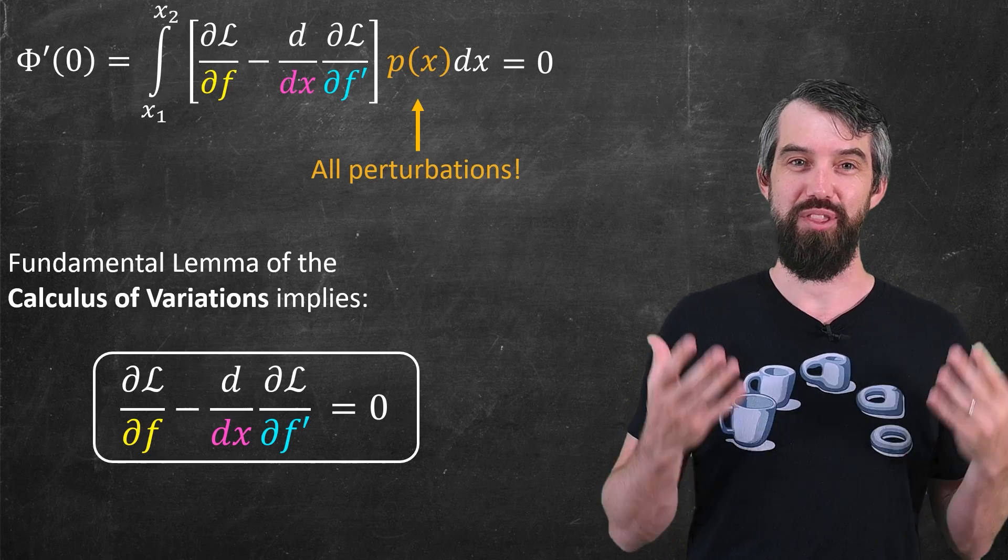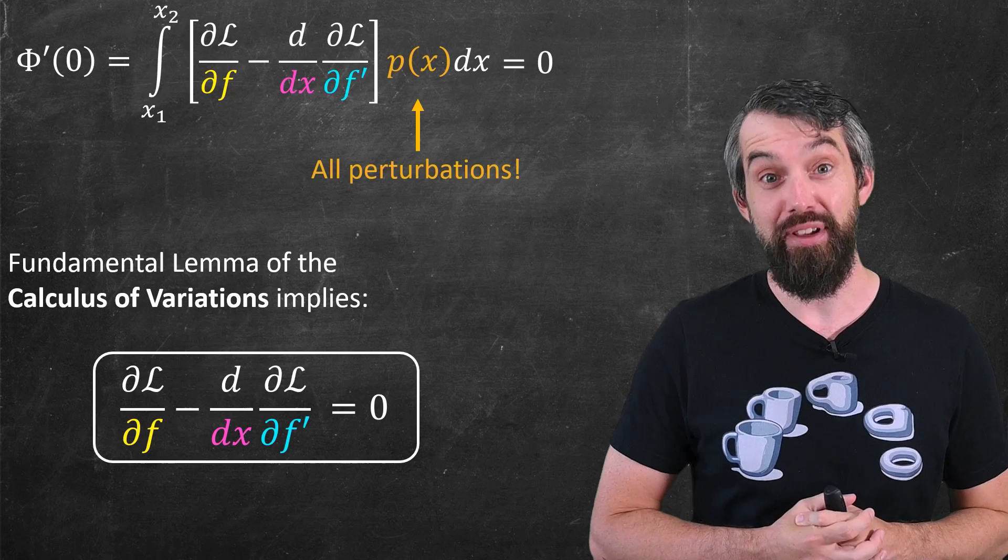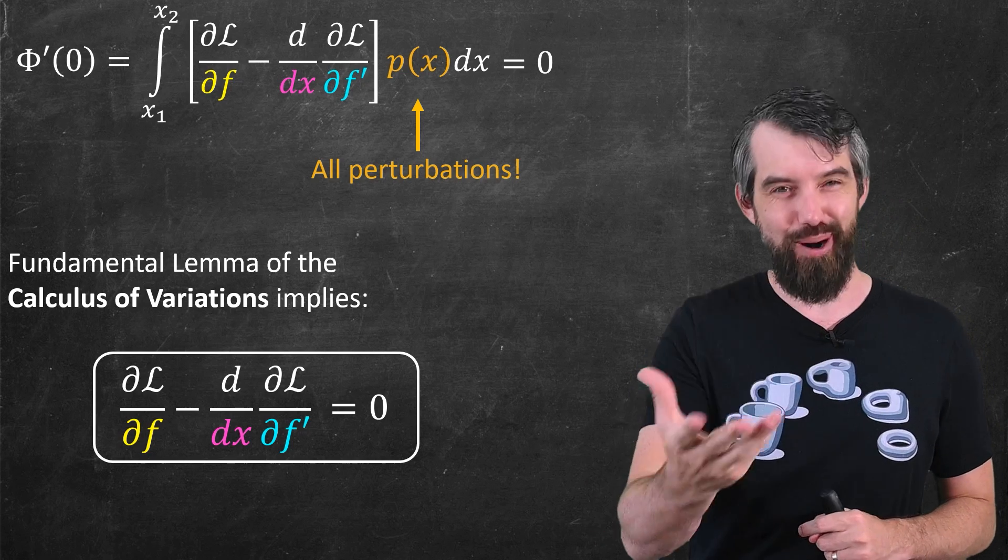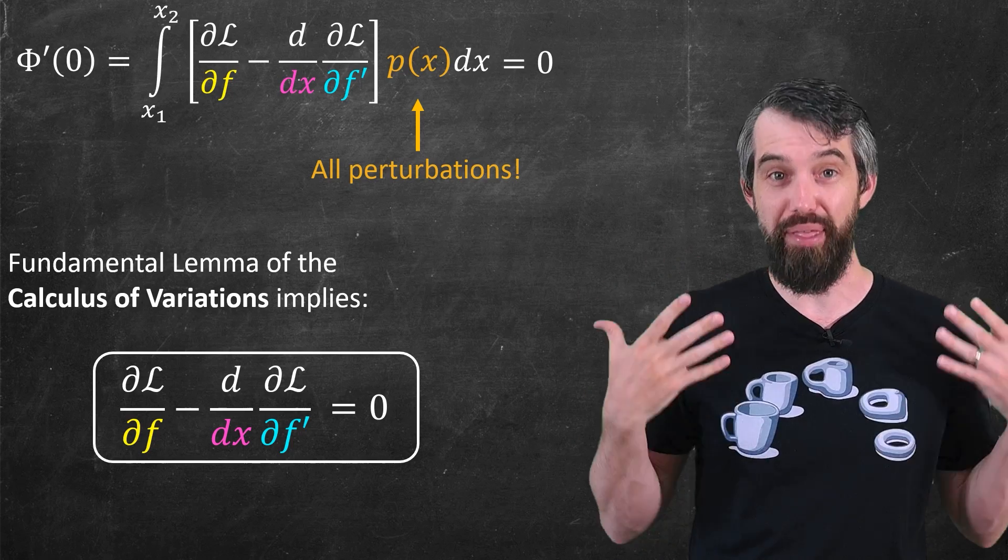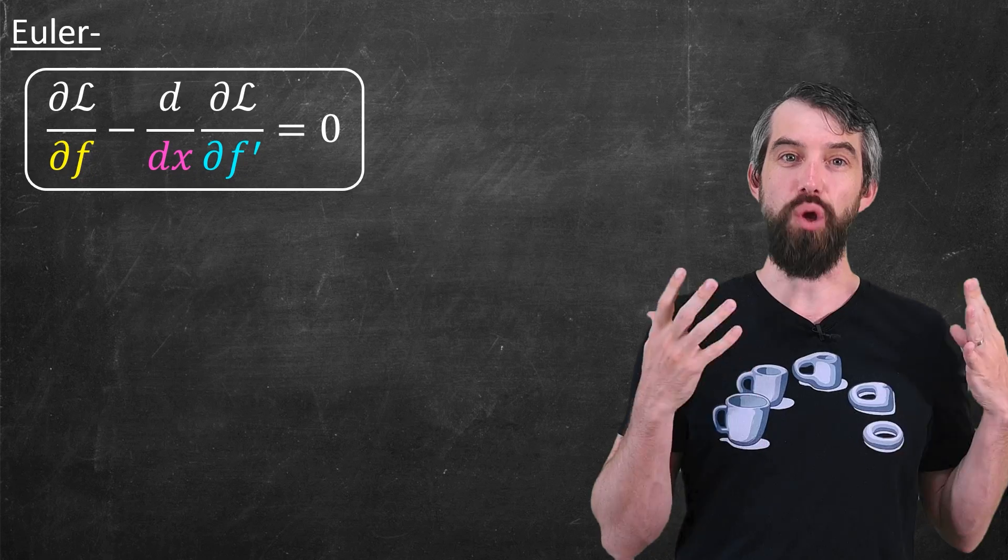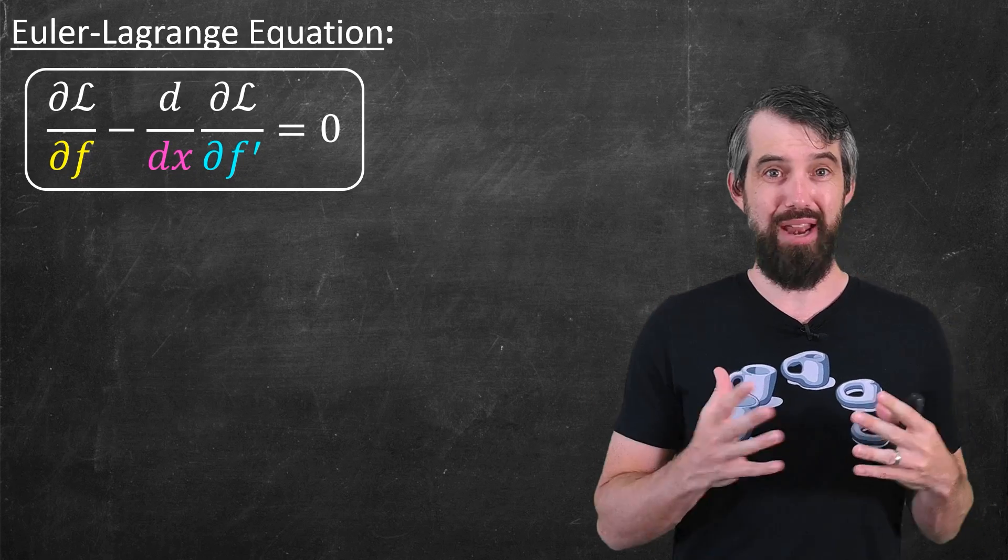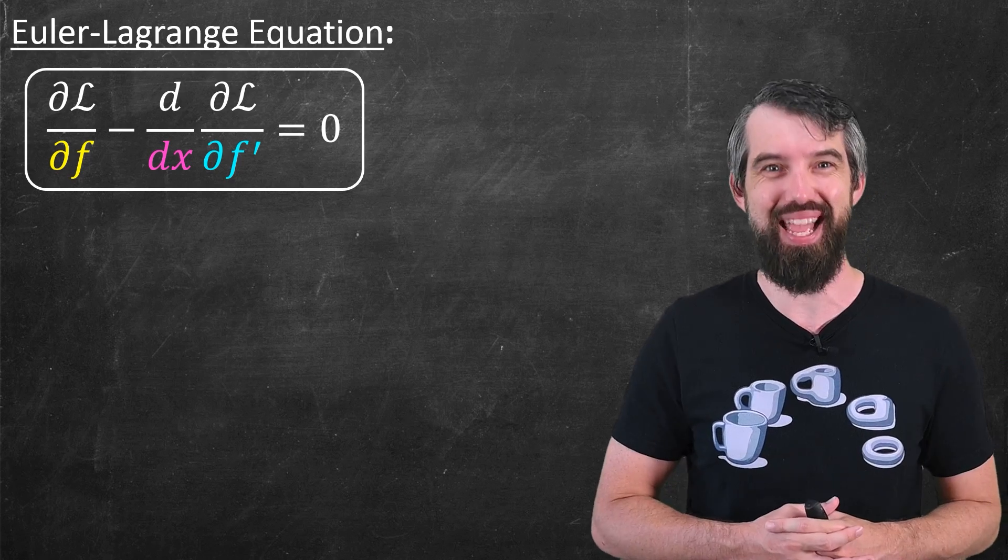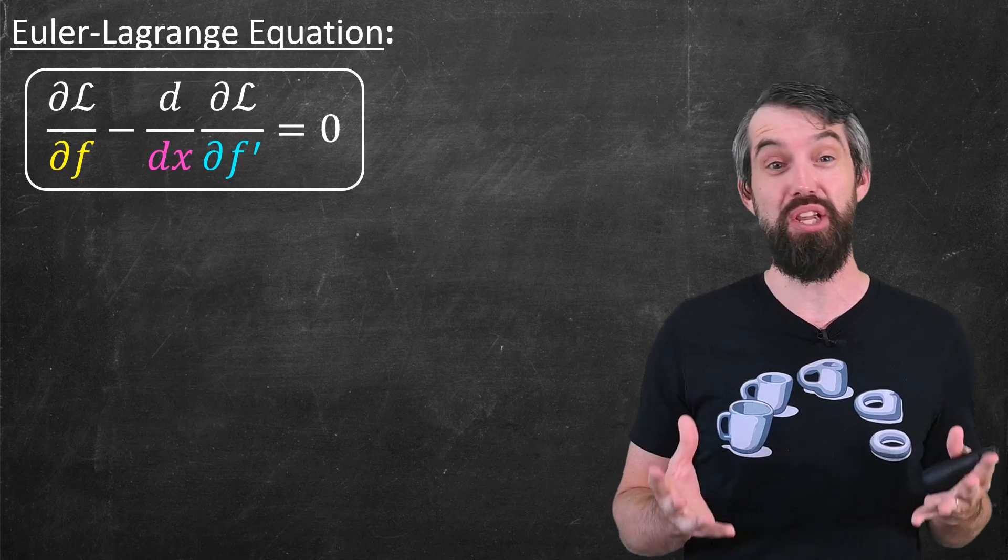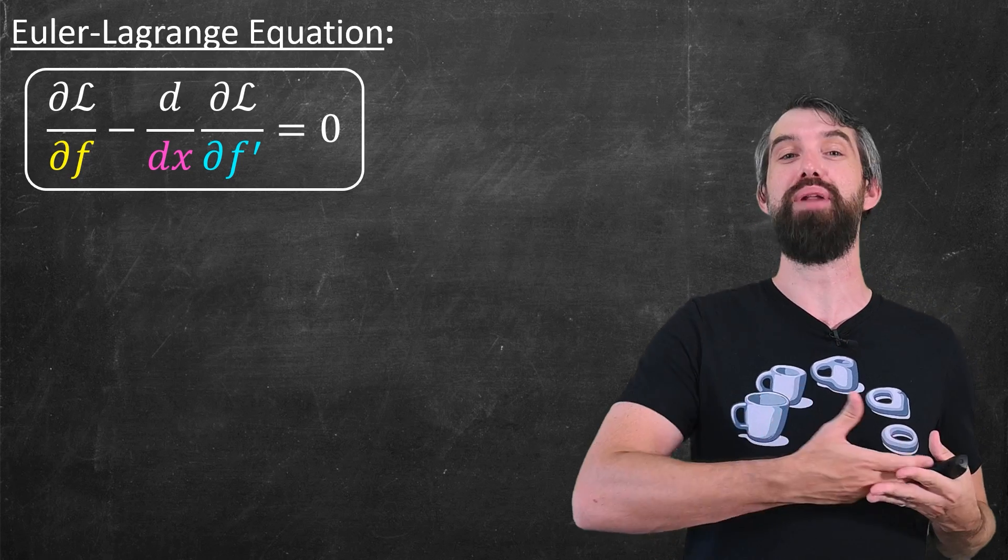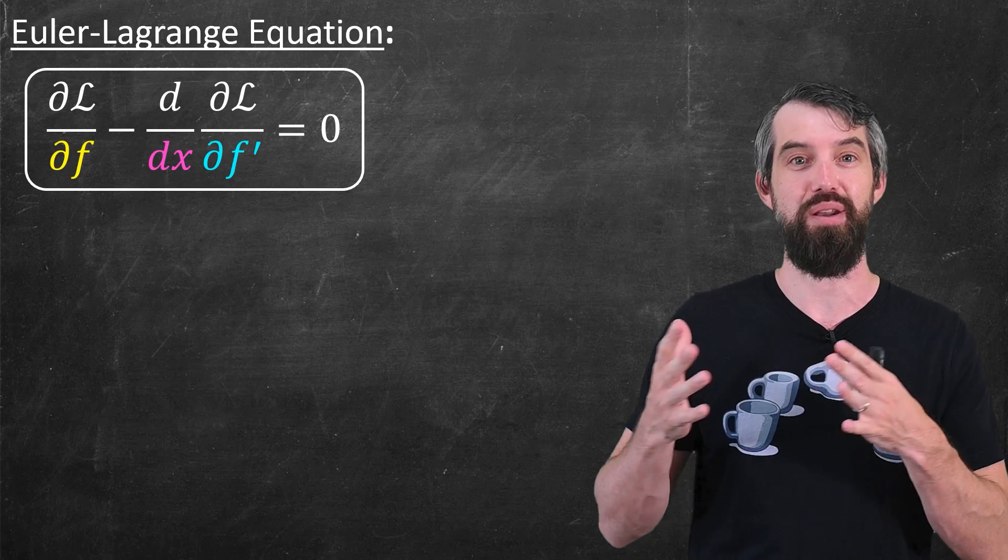And so we have this, the partial of the Lagrangian with respect to f, minus the derivative with respect to x of the partial of the Lagrangian with respect to f'. That expression must be zero. And this gives us the Euler-Lagrange equation. And while we're going to use this Euler-Lagrange equation in this video for our rather specific example with minimizing a particular surface, well, it actually is incredibly powerful throughout a huge range of physics and mathematics.